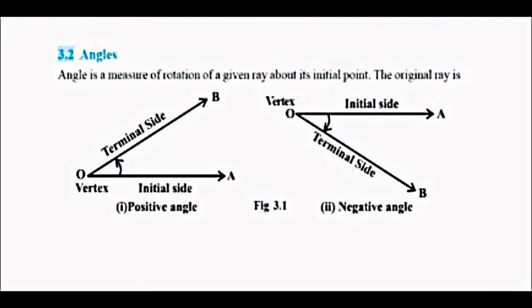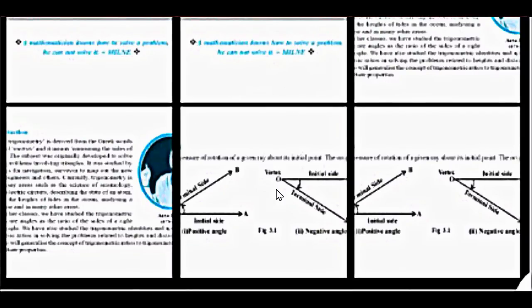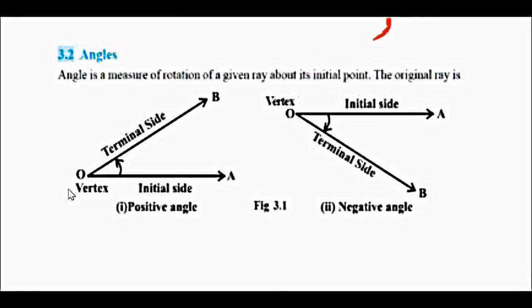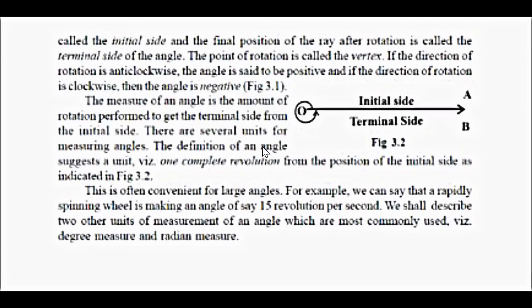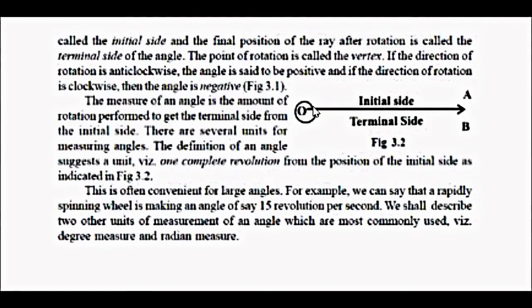Now the concept which comes here in trigonometry is the angle. So what exactly is angle? Angle is nothing but the measure of rotation. You take any ray and rotate it along this initial side. We indicate it by O and rotate it through some rotation. This rotation is actually the angle from the initial point. So angle is the measure of rotation of a given ray about its initial point, and it can be a positive angle as you see here, and it can be a negative angle also.